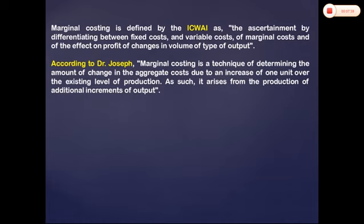As per ICWAI, marginal costing is the ascertainment by differentiating between fixed cost and variable cost of marginal cost, and the effect on profit of changes in volume or type of output. According to Dr. Joseph, marginal costing is the technique of determining the amount of change in aggregate cost due to an increase of one unit over the existing level of production. As such, it arises from the production of additional increments of output.